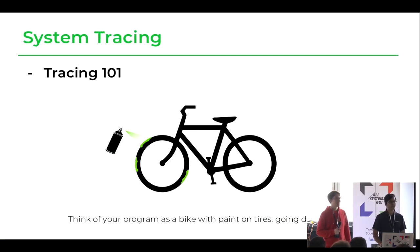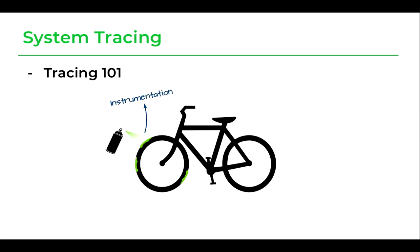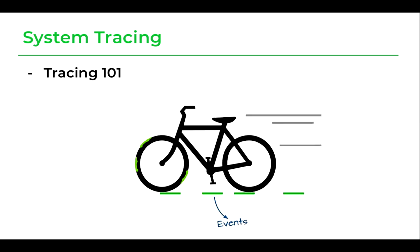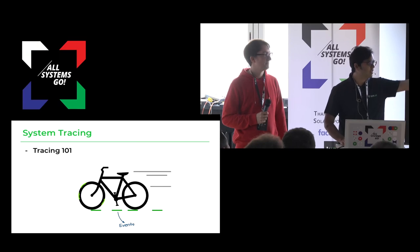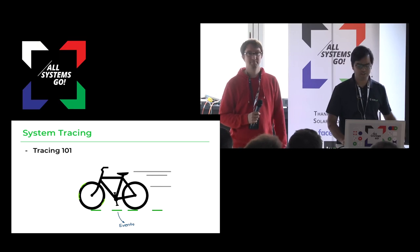A fine example of what tracing is: think of your program as a bike which is running, and you spray some paint on the tires — that's instrumenting your application. Those individual points where you sprayed are trace points. As you start running the bike, you're generating events, and you get an actual trace on the road. These traces give you the exact time at which each event happened.